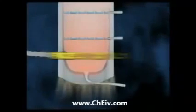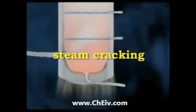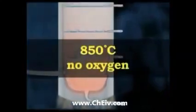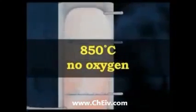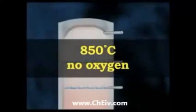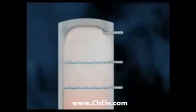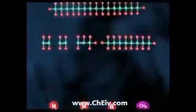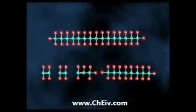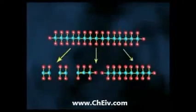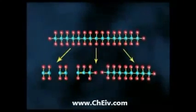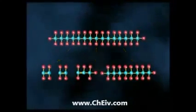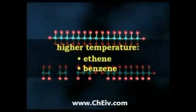In thermal steam cracking, the hydrocarbon is diluted with steam and then briefly heated in a very hot furnace at around 850 degrees Celsius, without oxygen. The reaction is only allowed to take place very briefly. Light hydrocarbons break down to lighter alkenes including ethene, propene and butene, which are useful for plastics manufacturing. Heavier hydrocarbons also give products rich in aromatic hydrocarbons and hydrocarbons suitable for petrol or diesel. Higher cracking temperature favours the production of ethene and benzene.